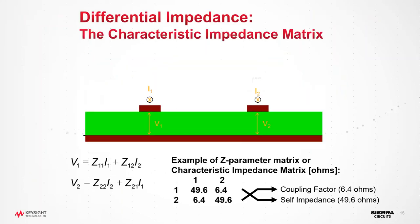With the CMRR benefit comes some complexity. Rather than a single-ended line that can be perfectly defined with just two parameters — electrical length and impedance — a differential architecture has a characteristic impedance matrix: a two-by-two matrix that tells us the coupling factor depending on how close the two traces are to each other. There are always trade-offs when going to more noise-immune architectures.